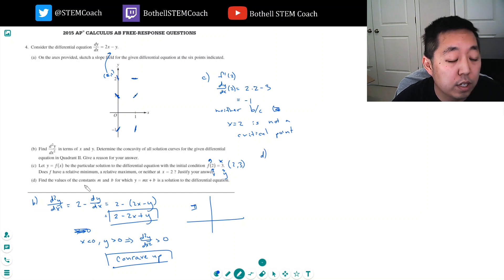Find the values of the constants m and b for which y equals mx plus b is a solution to the differential equation. Okay, so here they're saying, suppose I had a solution that was y equals mx plus b. Well, dy/dx is just equal to the derivative of this, which is just equal to m. Because the derivative of b is 0. So, that would have to equal, so I'm basically taking this and plugging into this equation. I have 2x minus y, which is mx plus b.